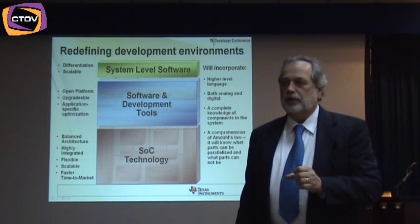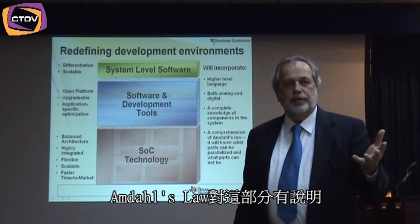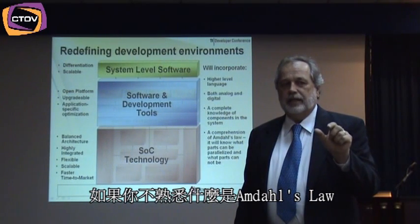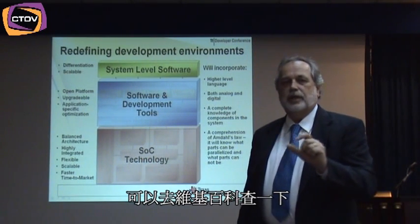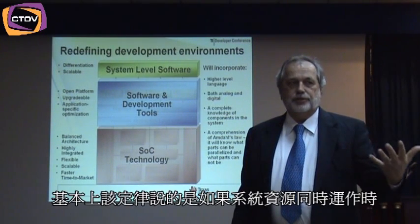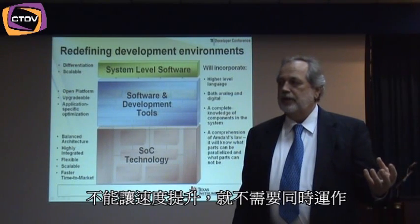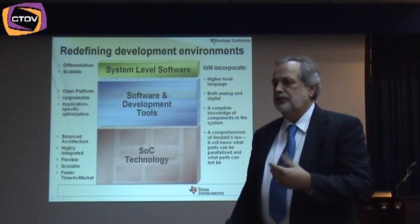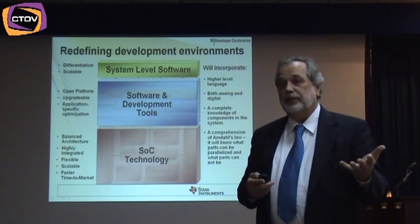I've used the term Amdahl's Law. If you're not familiar with it, you can look it up on Wikipedia. Amdahl's Law basically says that if I cannot parallelize a task, putting more resources on it does not make it work faster. Most real-world signals, which DSPs can handle, are very parallelizable. Many of the system-level things are not. So that compiler needs to know which is which and how to handle both. That's the complexity of the compiler.